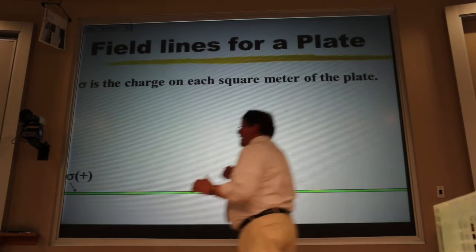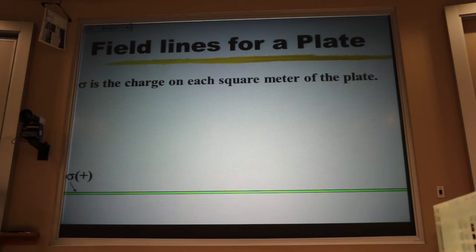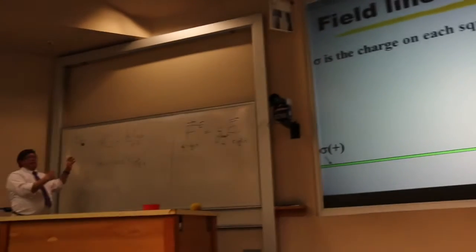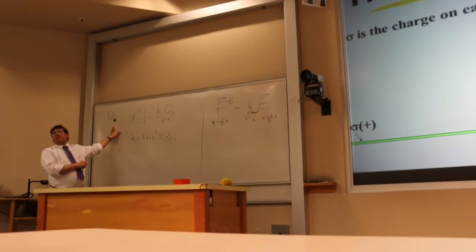Now, up until now, we've dealt with charges, source charges, that are points. And when they weren't points, when we had a charge smeared along a rod, we broke the rod up into points and we used superposition.